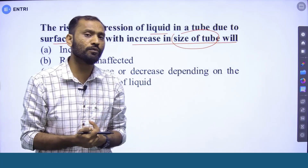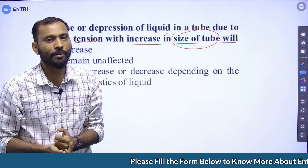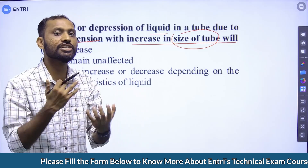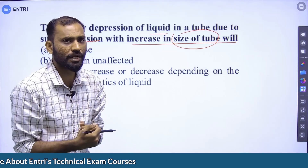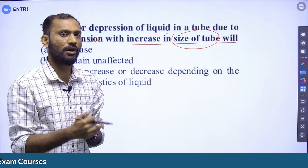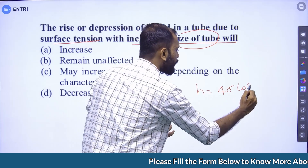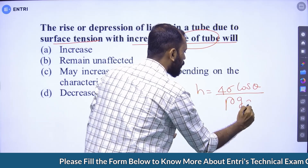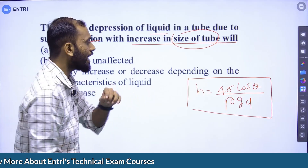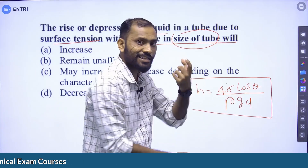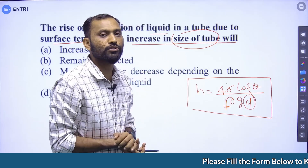This involves capillarity — capillary rise or capillary depression. The capillary rise h is given by the equation: h = 4 sigma cos(theta) / (rho × g × D), where sigma is surface tension, theta is the angle of contact, rho is density, and D is the diameter of the tube.